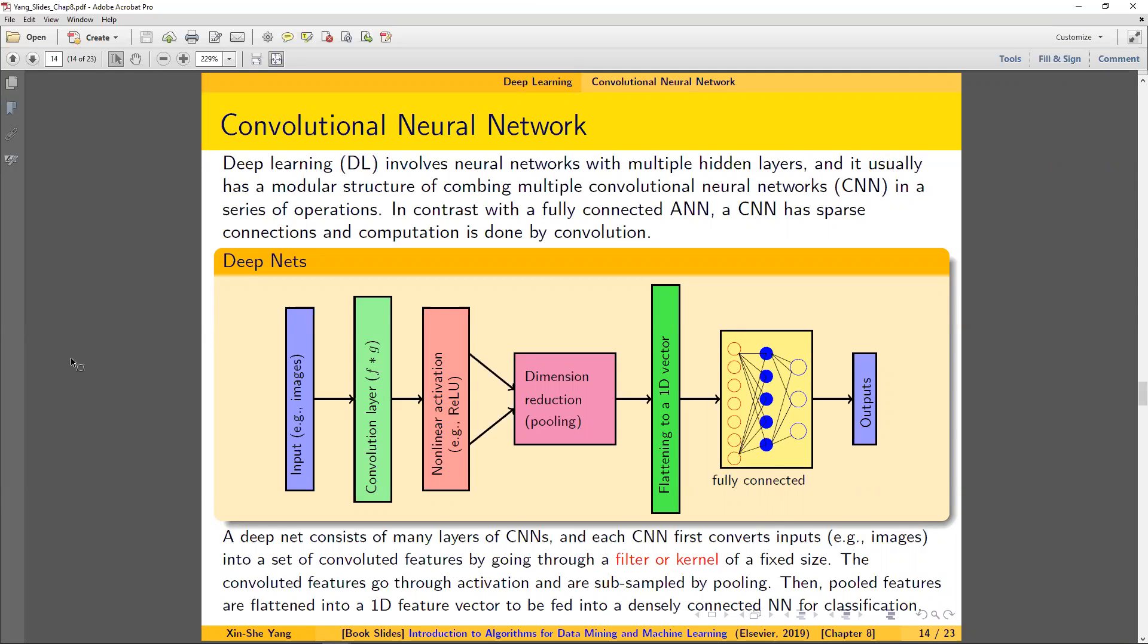So here we want to discuss a special type of deep learning network called convolutional neural network. For convolutional neural network, it's widely used in the image classification space. If you look at this chart, you can see that for deep nets, it involves multiple components. The first component is you have a set of input images, the first component is called convolution layer. Hence the name of convolutional neural network. After the convolutional layer, there's an activation layer called nonlinear activation. ReLU, remember that ReLU has the nonlinear structure.